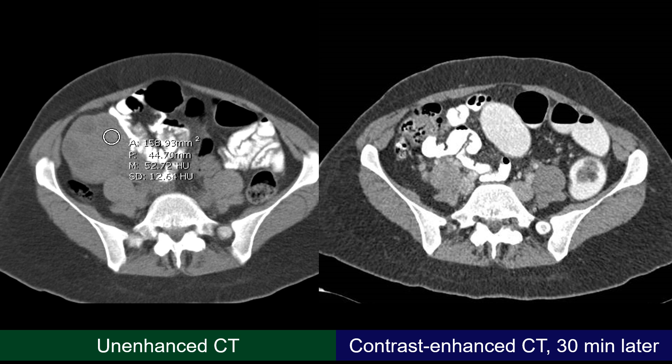For iron, fresh blood is a possibility but here we are not dealing with that — this is clearly a solid lesion. Good examples of a solid lesion containing iron include splenosis, and a good example of a solid lesion containing iodine is struma ovarii, just to mention one example of each.